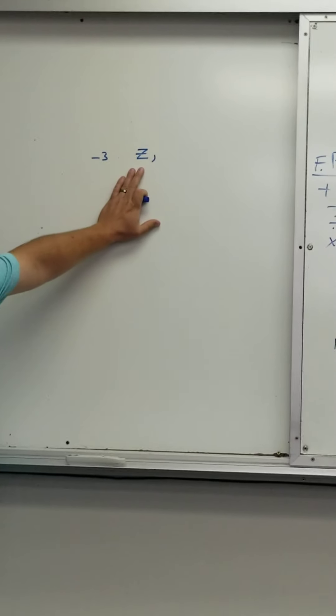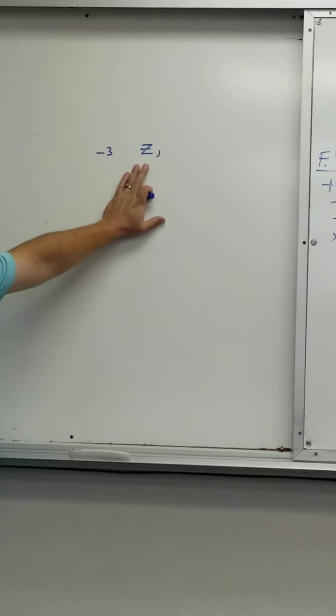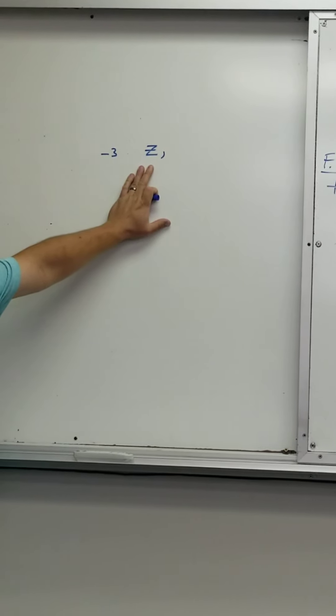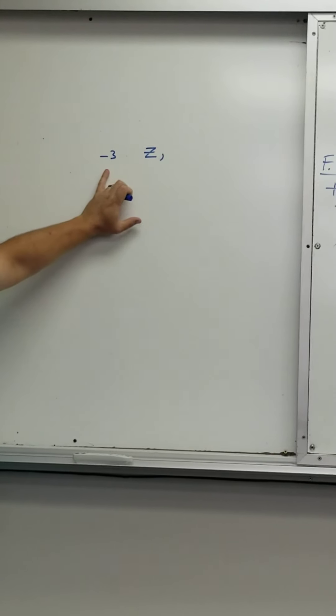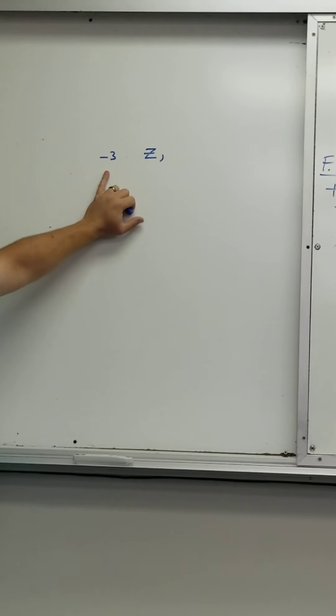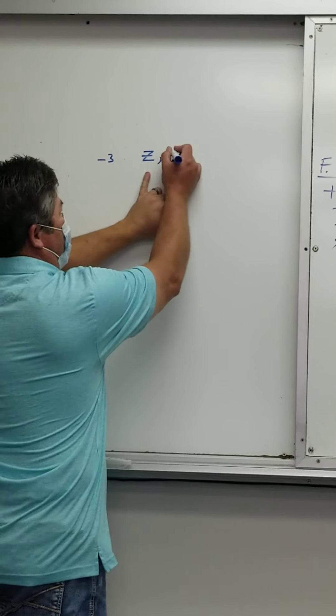So I'm going to put Z for an integer. What else is it? Is it rational? Yes, because I can put that over what? Over one, and it would be a fraction. So therefore, this is still rational.